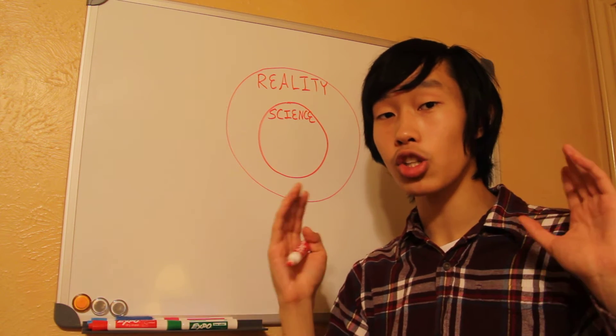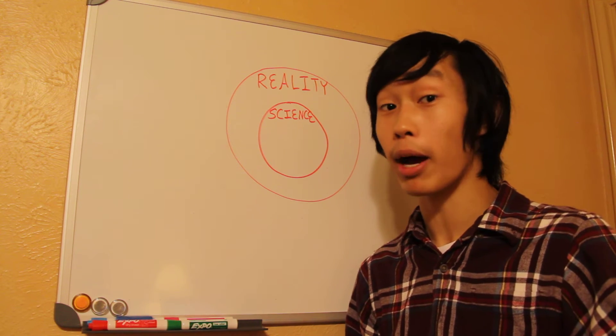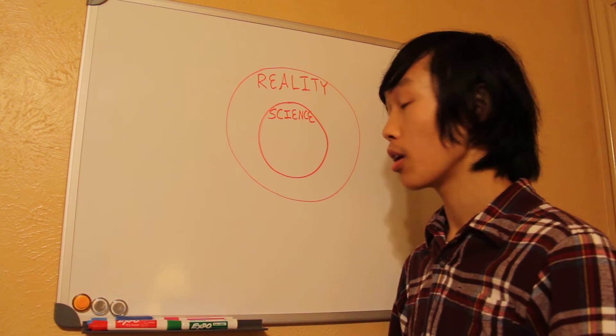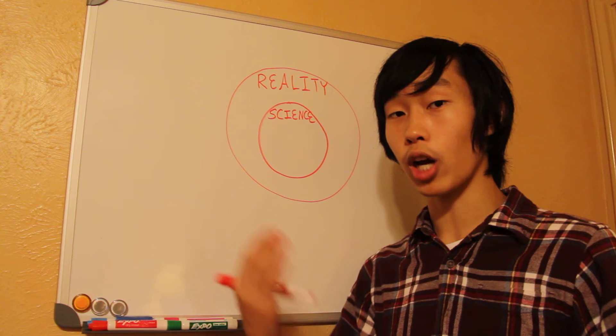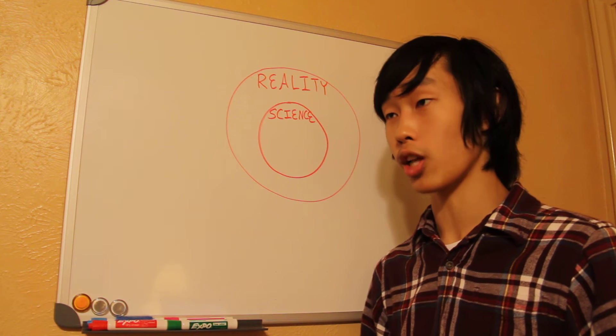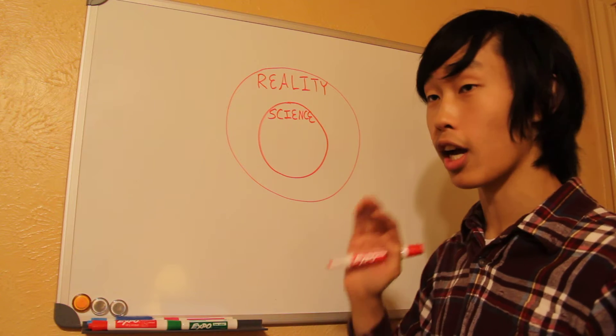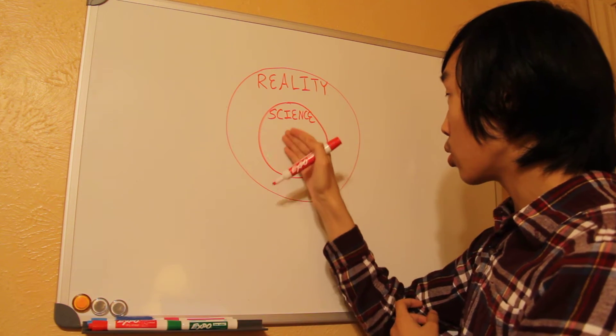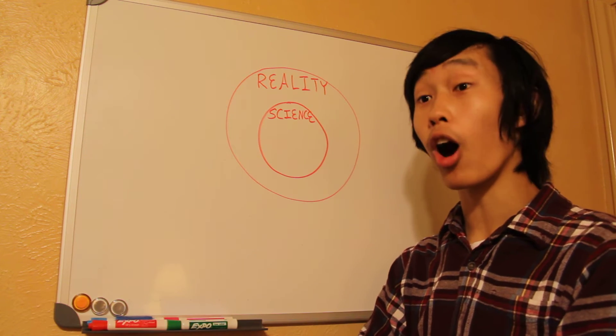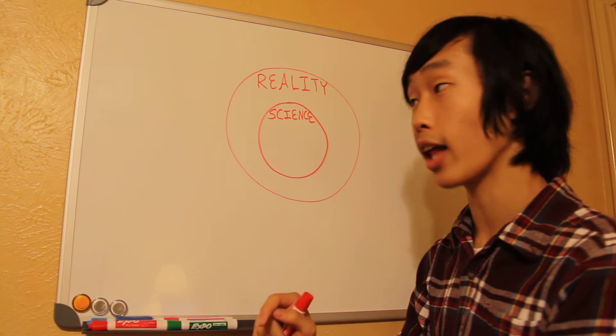And the thing is, there is no authority that says, this is what science is, and you have to listen to my definition and use it. There is no such authority. And so there's much controversy over what constitutes a science and what does not. And there are even people who believe that certain things in science are not real. Science revolves around studying things that are real. And that's why I included science inside this circle of reality.